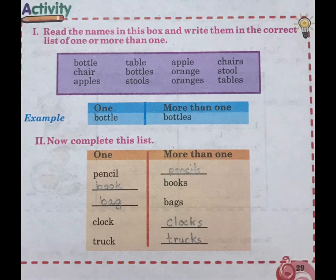Example 1: one bottle, more than one — bottles. Now complete this list: one and more than one. Pencil — pencils. Book — books. Bag — bags. Clock — clocks. Truck — trucks. I have done it for you.